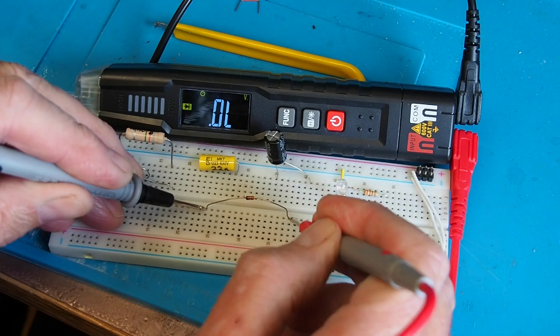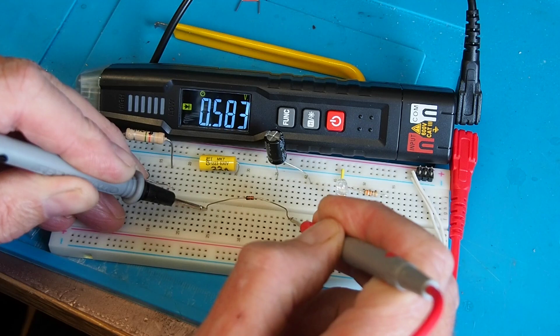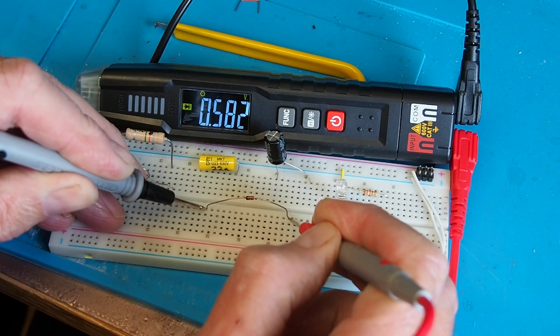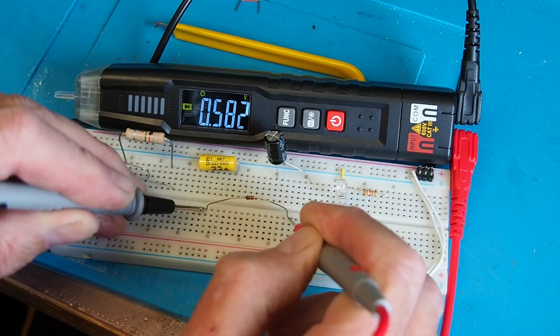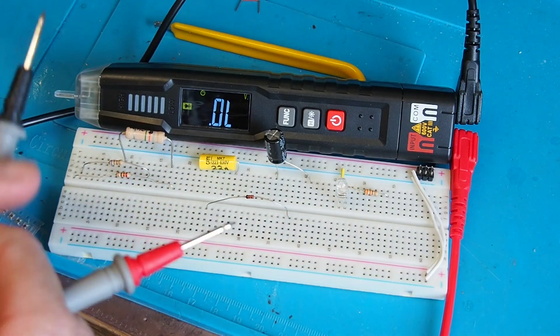0.583 volts, so that's telling me that's a silicon diode, small signal diode. So there are the basic functions and those it does rather well.